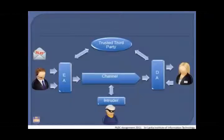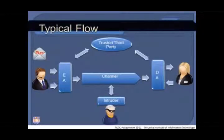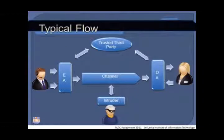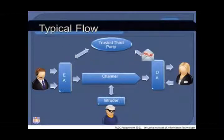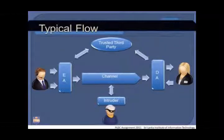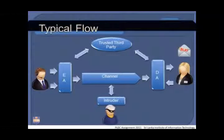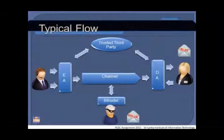In the typical flow of encryption, once the sender sends a message, it is transformed into an encrypted message using encryption algorithms and transferred via a channel or public network. An intruder residing in the public network may monitor the communication but cannot understand the content because it is encrypted. At the receiver end, the message is decrypted using a decryption algorithm. The key used for encryption and decryption can be obtained from the certifying authority, shown in the figure as a trusted third party.